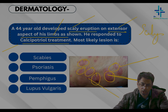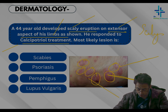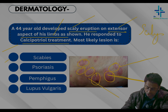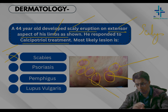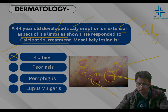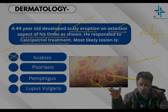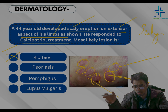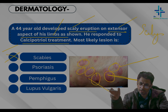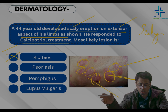Scabies is not the answer — scabies would have a history of infection in communal settings like hostels, with very pruritic lesions and a lot of itching. Pemphigus would present with bullous lesions that are very painful, with oral manifestations such as oral ulcers, widespread and having a very acute course — none of which is suggested here.